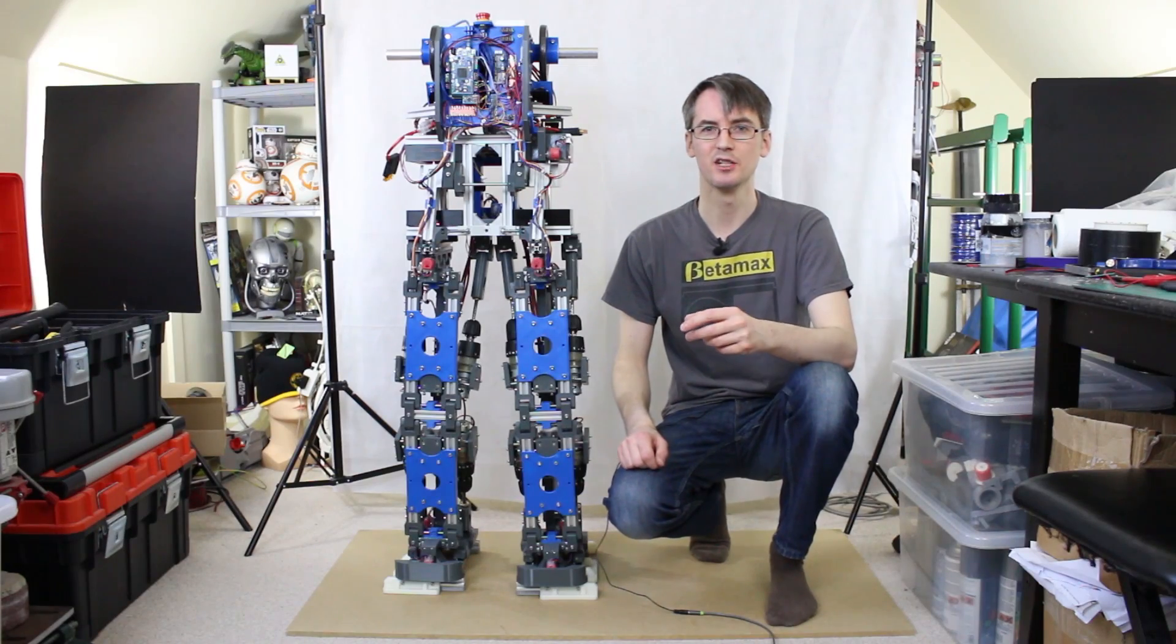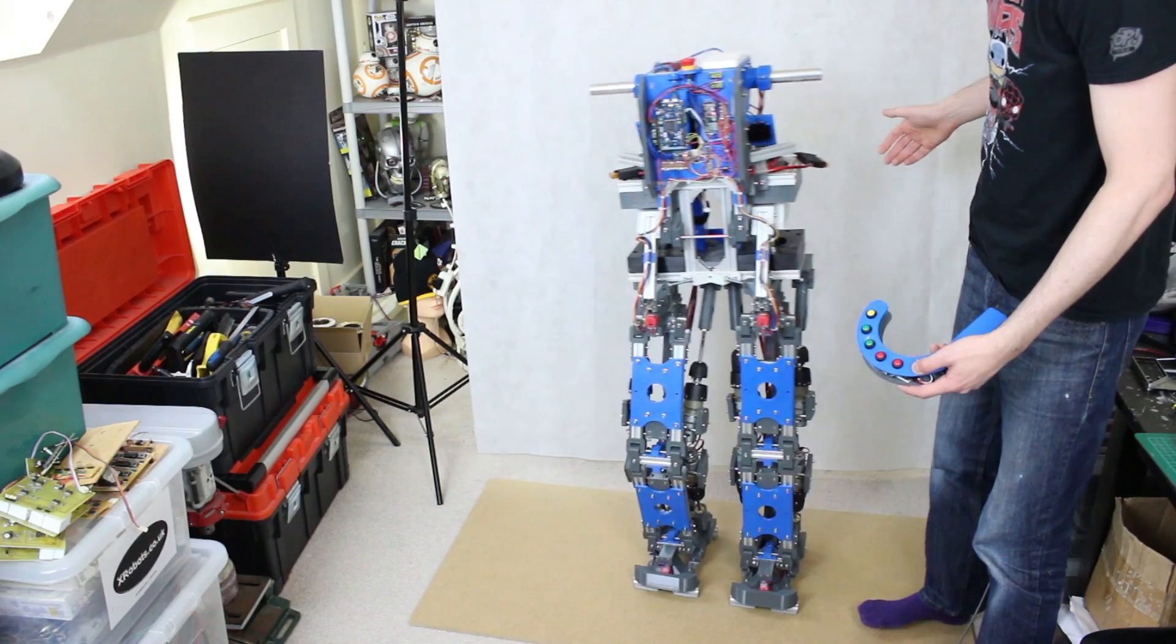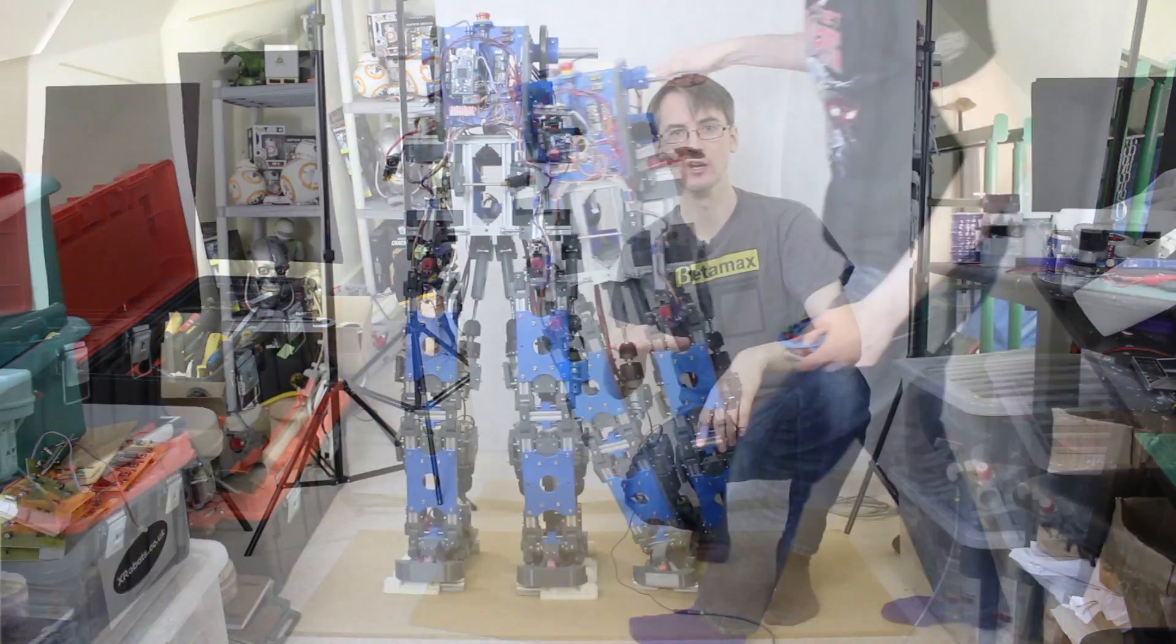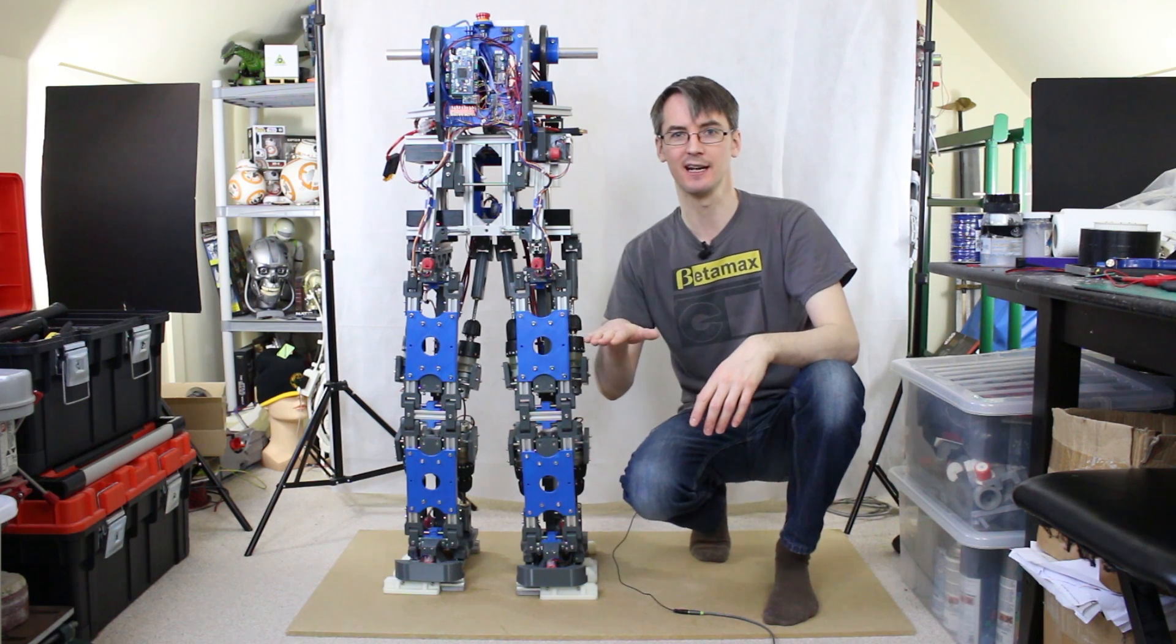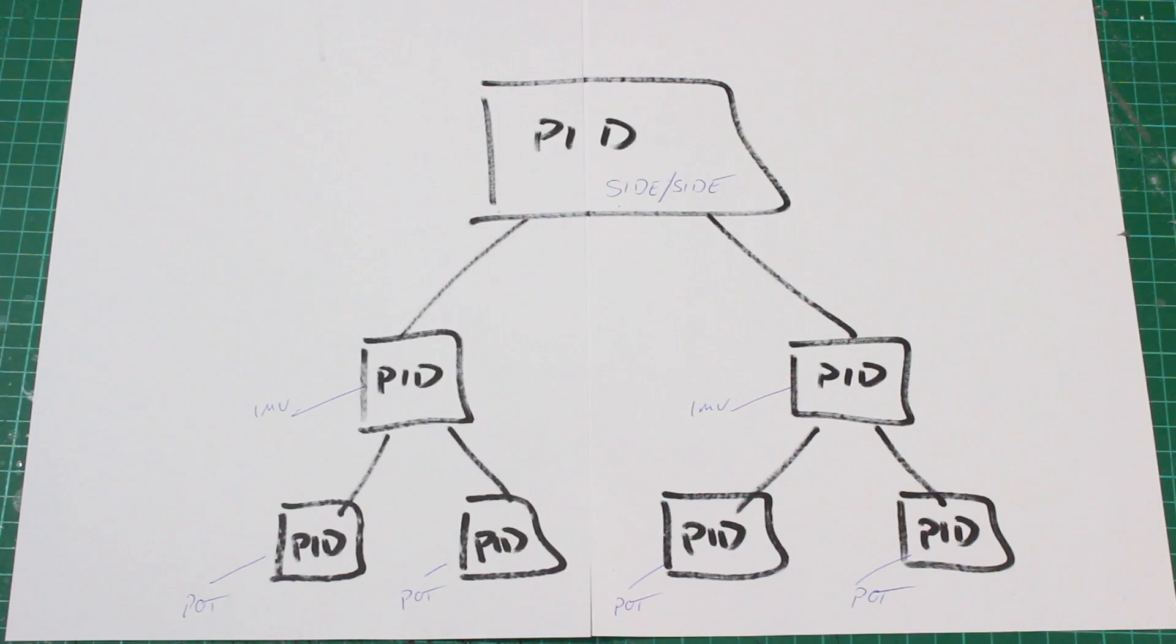However if you're watching carefully in the last bit of testing footage when it fell over that way you'll notice that in fact what happened was the ankle did actually bend over. It didn't tip over on its ankle with the foot straight. The ankle actually went with it. And that's for a specific reason that I need to solve. So this is my current PID controller layout. So we've got a PID at each ankle and hip side to side. And those are driven by the pots and they drive the motors based on the position.